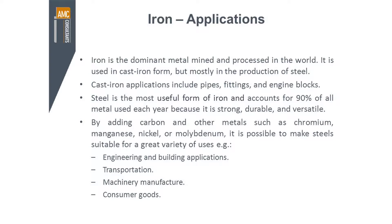There are cast iron type applications as well as steel production. The cast iron applications that you might see around the world are pipes, fittings, engine blocks, and things like that. But fundamentally, steel is the most useful form of iron and accounts for 90% of all metal used in the world. And that's because it's strong, it's durable, and it's versatile. When you start to add things like carbon plus some of the other metals — chromium, manganese, nickel, and molybdenum — it's possible to make a whole range of different steels for different applications.